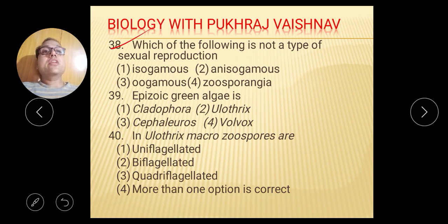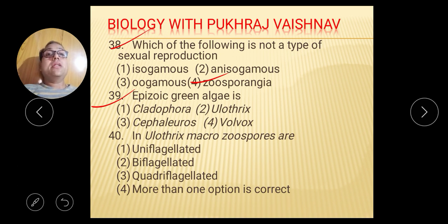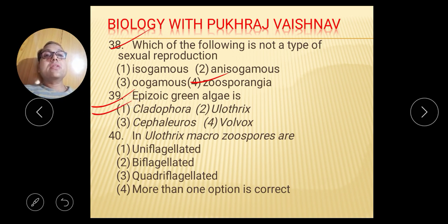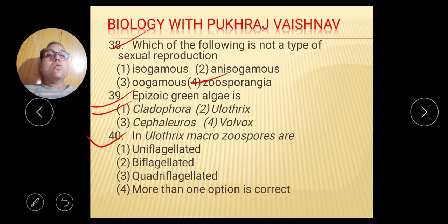Question 36: Stored food in green algae is starch and oil droplets — Mannitol is used in brown algae and floridean starch in red algae. Question 38: Which of the following is not a type of sexual reproduction — anisogamous is a type. Question 39: Right answer is Cladophora. Question 40: Macrozoospores — uniflagellate, biflagellate, quadriflagellate — more than one option is correct, so the right answer is more than one option is correct.